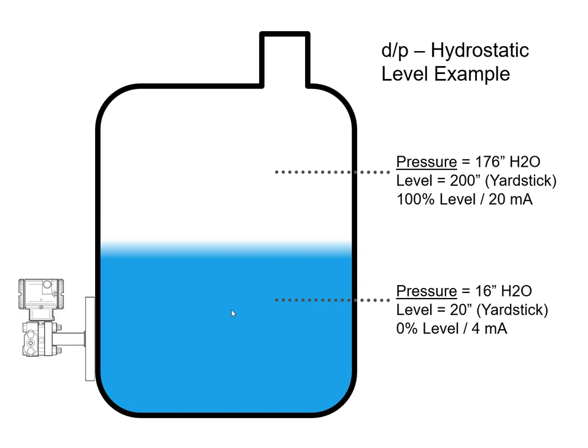But first, to explain buoyancy, I'm going to use DP level or hydrostatic level as an example. DP level remains the most commonly used process liquid level measurement. But this DP cell is actually not measuring level — it's measuring pressure, and we can infer level off of the pressure.